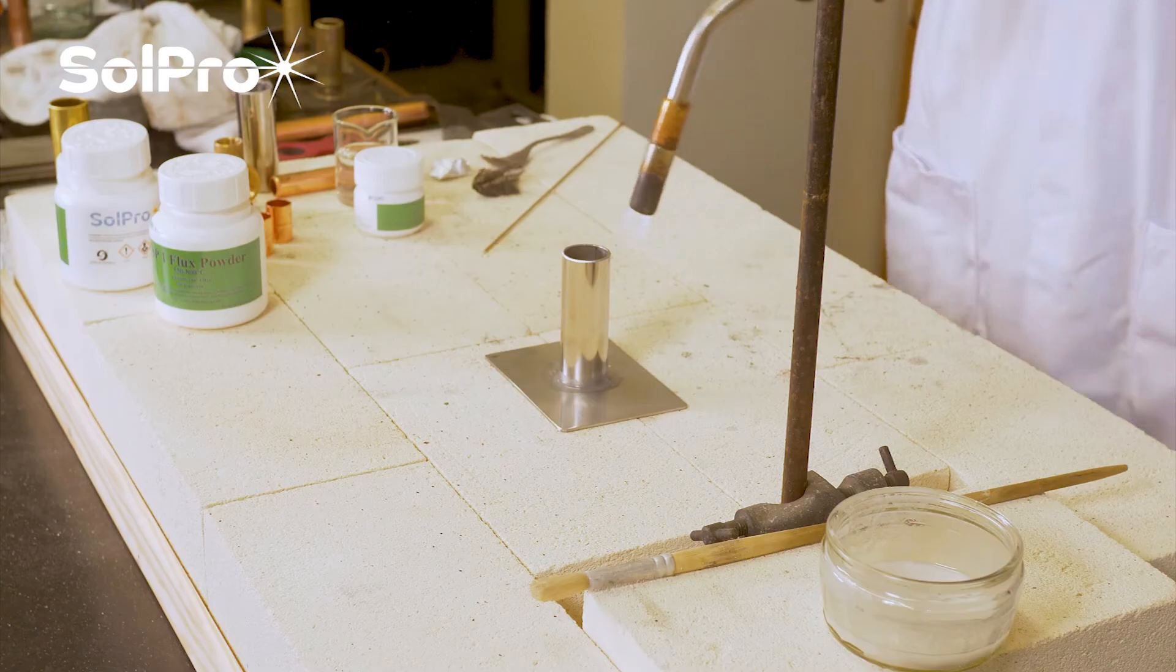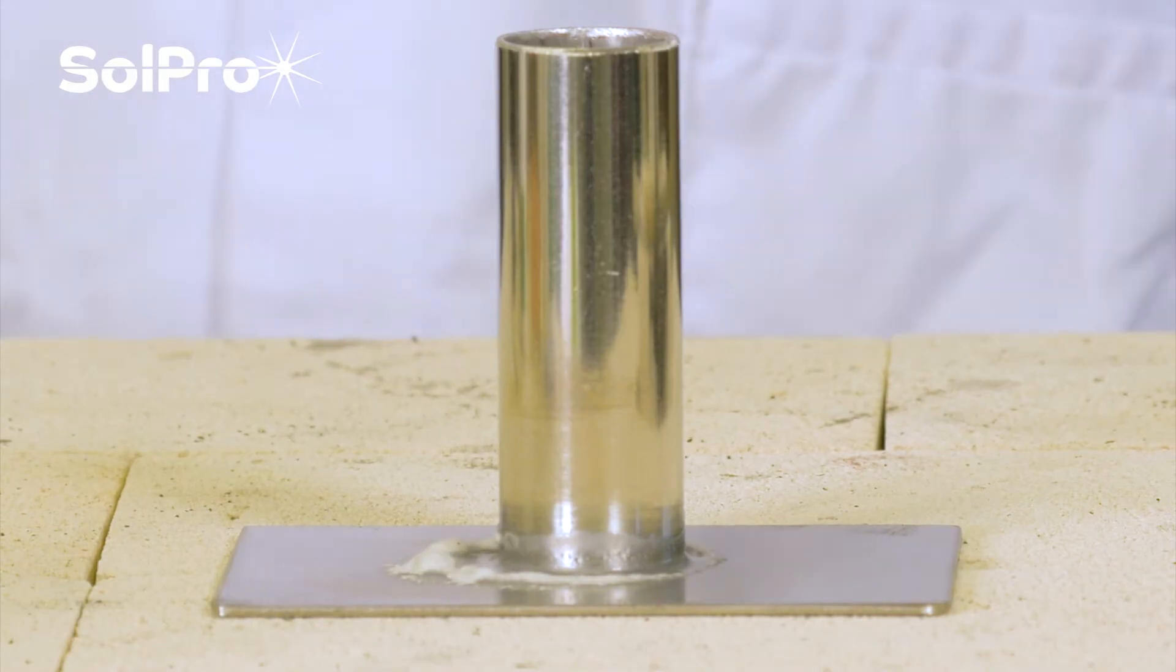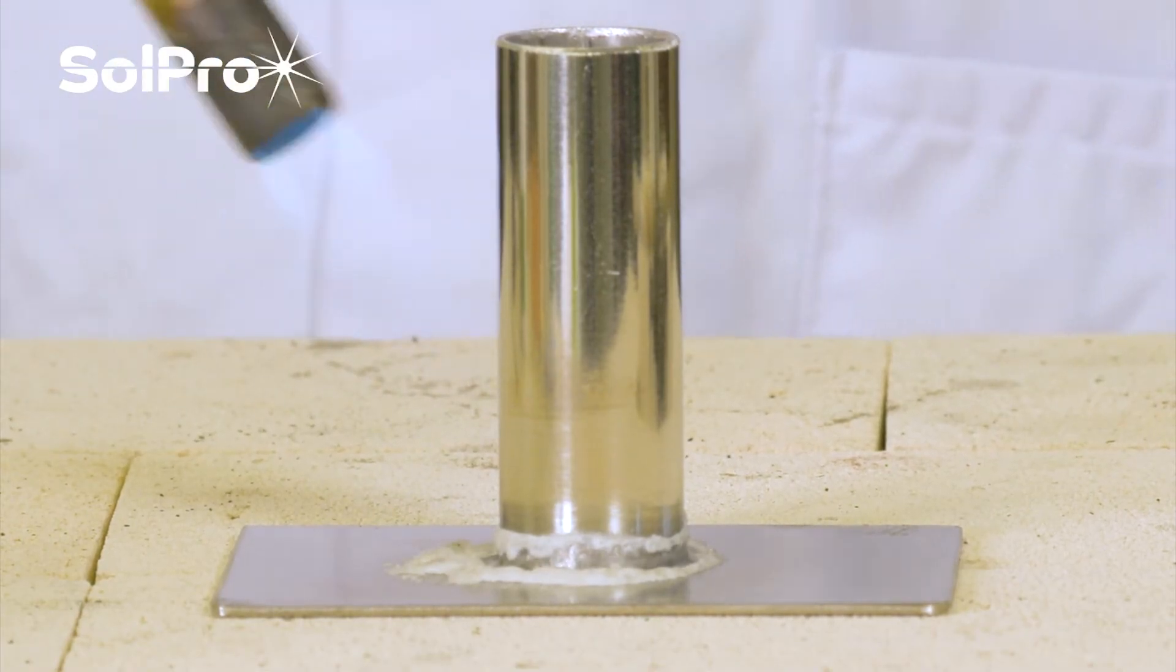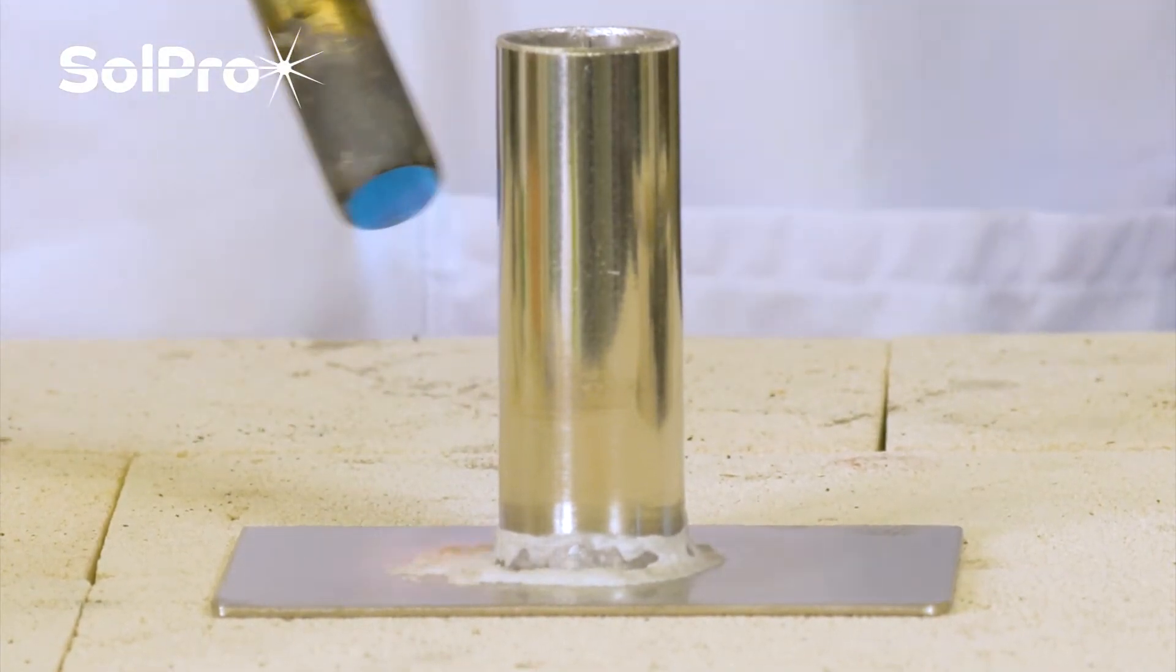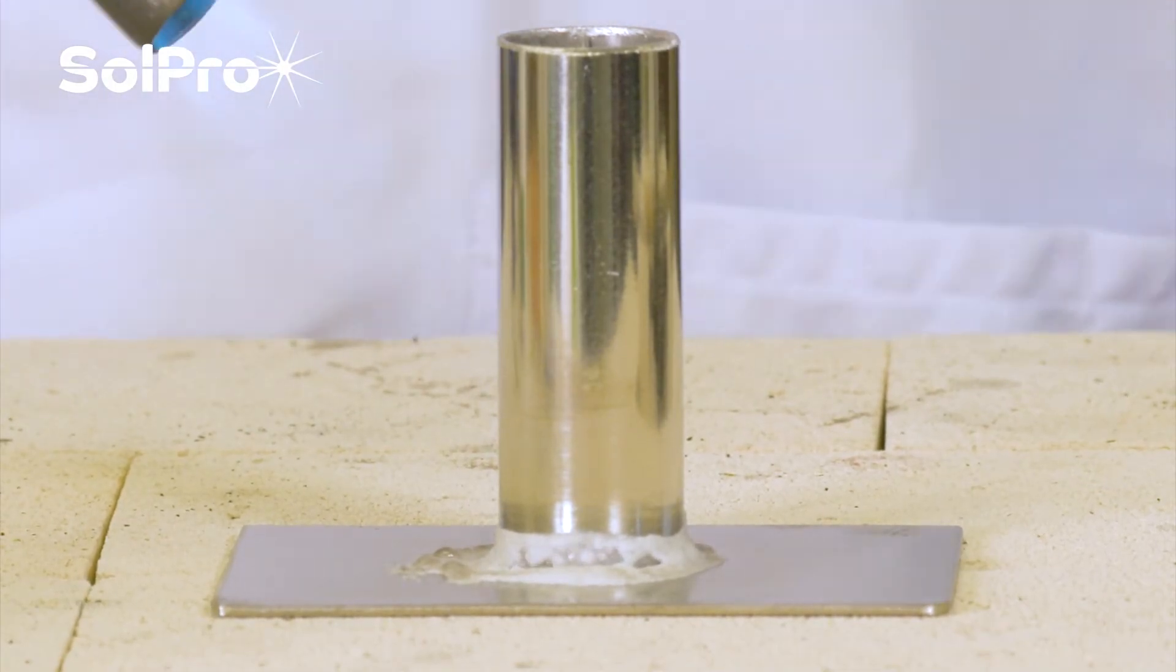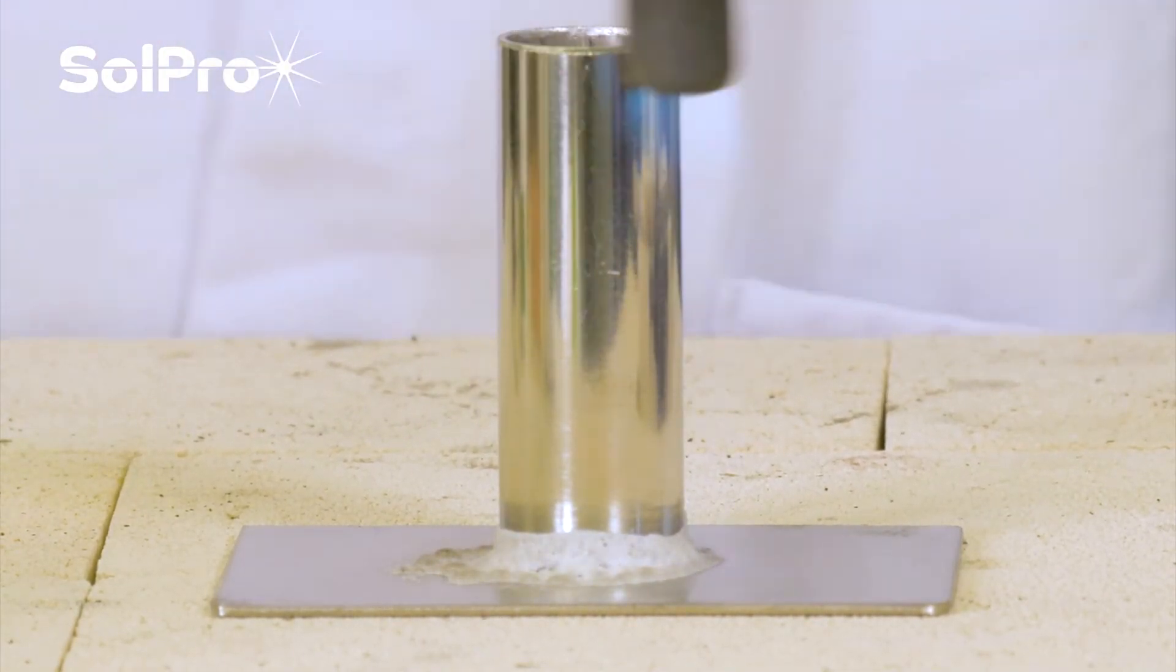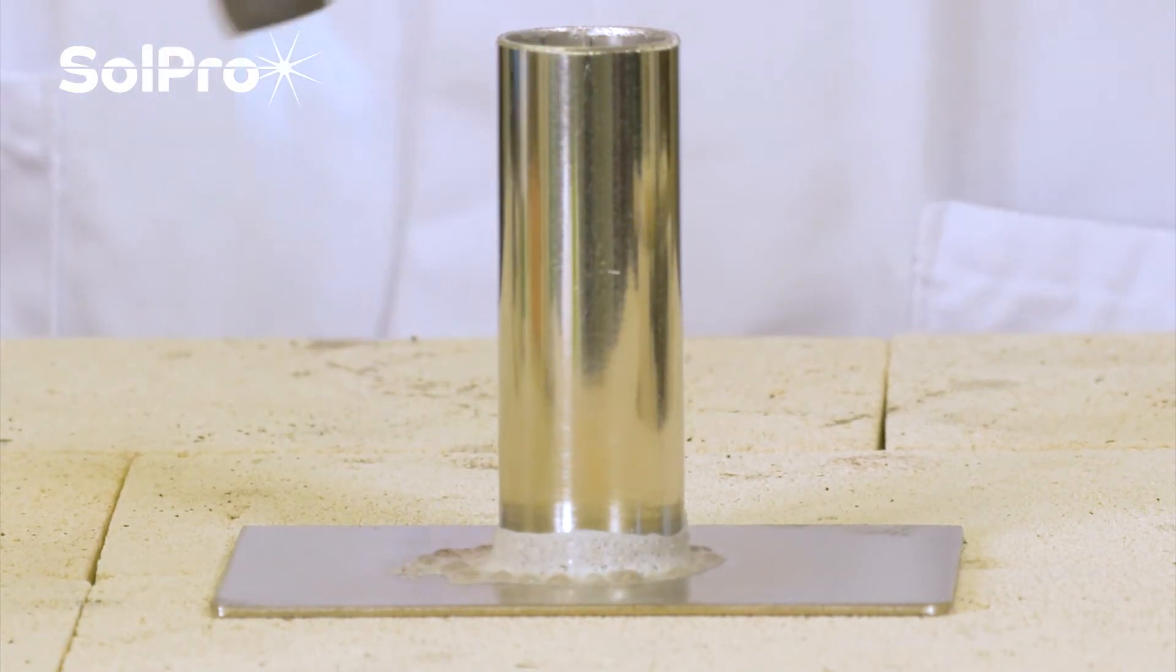Before we even think about trying to apply the brazing alloy we've got to get the thing warmed up. We're applying the heat all the way around. You can see the water that's being used to make up the flux paste is boiling off and it's a good way of indicating where you're getting the heat. Don't mistake that for the flux actually activating. We need to get it a lot hotter before we get the flux activating.